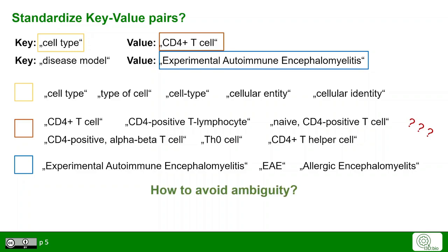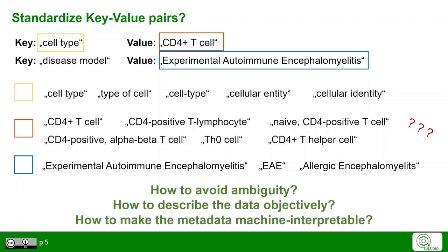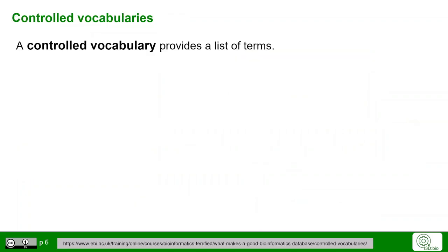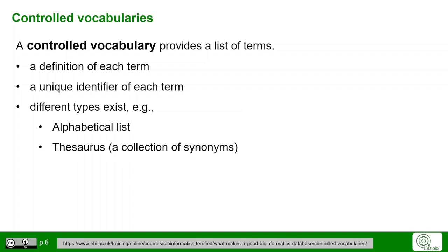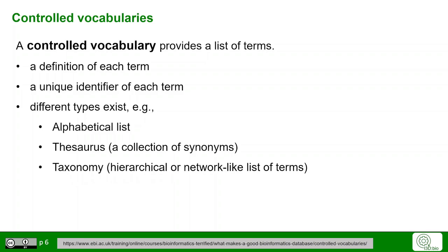How do we avoid ambiguity in terms? How can we describe the data as objectively as possible, and how can we make that metadata machine-interpretable? One possible solution is offered by controlled vocabularies. A controlled vocabulary is simply a list of terms where each term has a concrete definition and a unique identifier. Different types of these lists exist — the simplest would be an alphabetical list, but there could also be a thesaurus collecting synonyms, or a taxonomy with a hierarchical or network-like form.